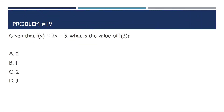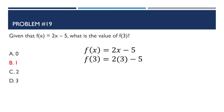Problem number 19: Given that f(x) = 2x − 5, what is the value of f(3)? The answer is 1. We replace x by 3: f(3) = 2(3) − 5 = 6 − 5 = 1.